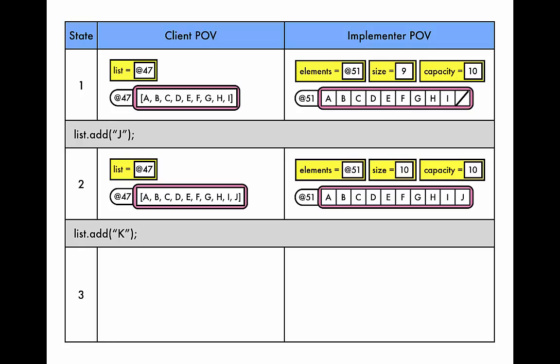That wasn't too bad but the next one is going to be a little trickier. So we want to add K to the list and we know from the client's perspective that we're simply going to add our new element K to the end of our list object. But what about from the implementer's perspective? What do we do now? Please pause the video again and try to figure out what happens this time.